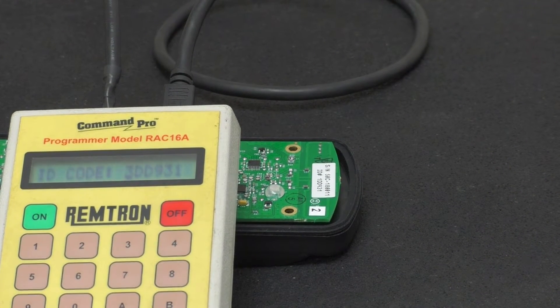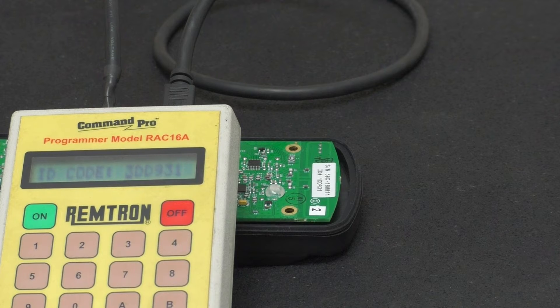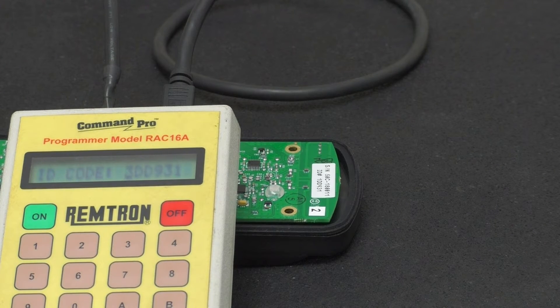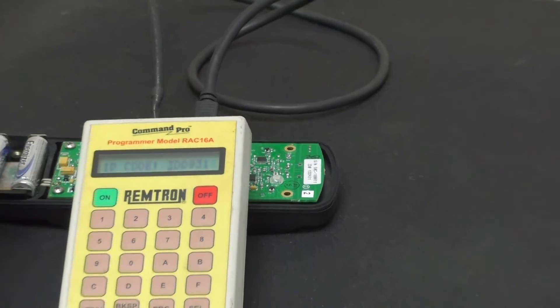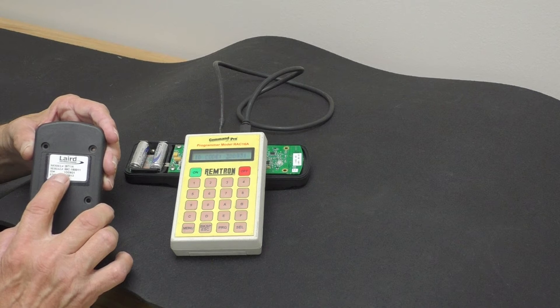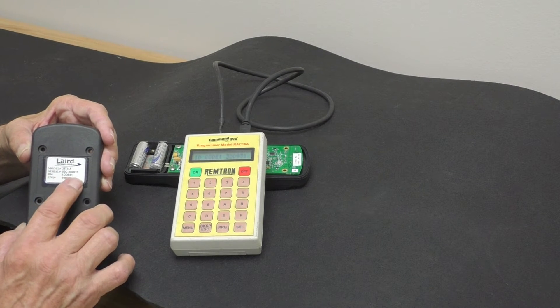This ID code is 399, excuse me, 3DD931. To check it, I look on the back of my transmitter, it says 1DD931.